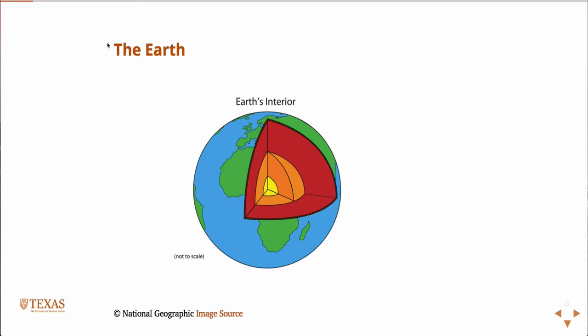The earth, we all know this again from high school, is made up of a crust, a thin crust, mantle, and an inner core. The crust, this picture is actually not even close to scale because the crust is even much thinner than what it's pictured there.